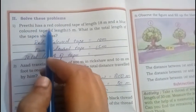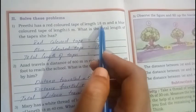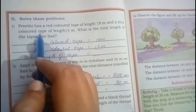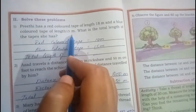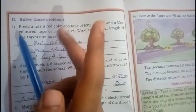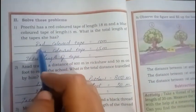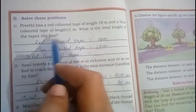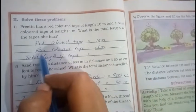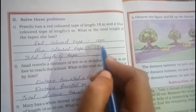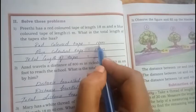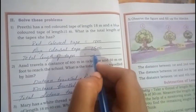Here, Preeti has a red colored tape of length 18 meters and blue colored tape of length 15 centimeters. So Preeti has two colored tapes, one is red, one is blue. Red color has 18 meters and blue color has 15 meters. If you add, how much you are going to get? 8 plus 5 is 13, 1 carry, 1 plus 1 plus 1, that is 3. Okay, 33 meters.